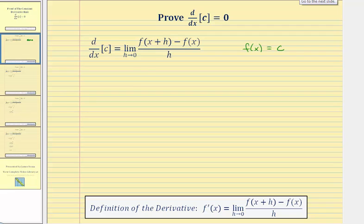And therefore, our limit simplifies to the limit as h approaches zero of the quantity c minus c divided by h. And of course, c minus c is equal to zero.